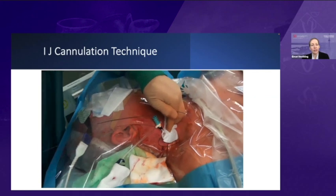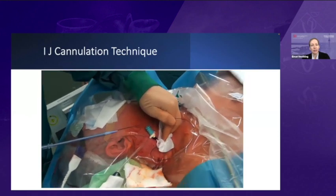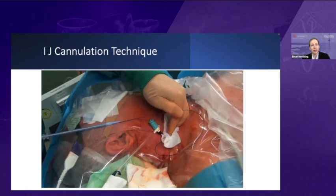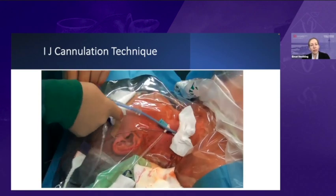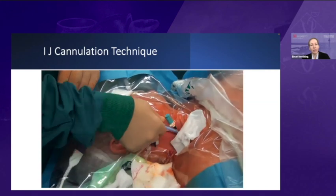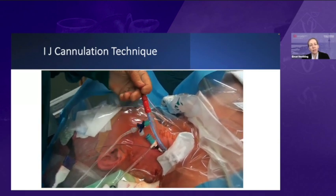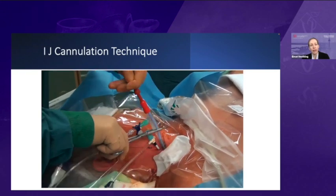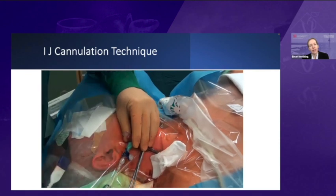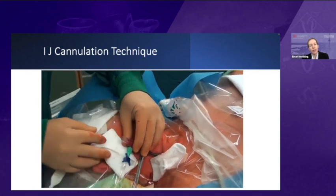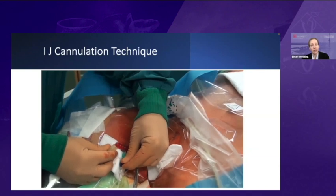Now we place the SVC cannula. We attach a three-way tap with 100 cc of saline containing 1,000 units of heparin. We remove the introducer, and as we do so, the venous return from this line is very large, so we have a clamp ready. You can see the blood already coming back. We de-air the line and then prepare to flush towards the patient. At our institute, we place the SVC cannula as well as the bypass lines outside of the sterile surgical field. We then flush towards the patient.